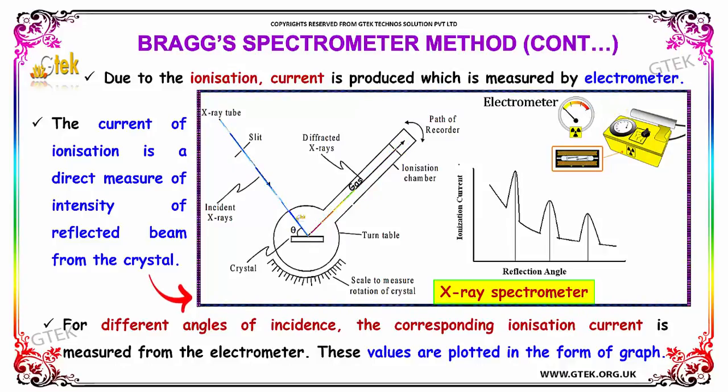For different angles of incidence, the corresponding ionization current is calculated. These values are plotted in the form of a graph.